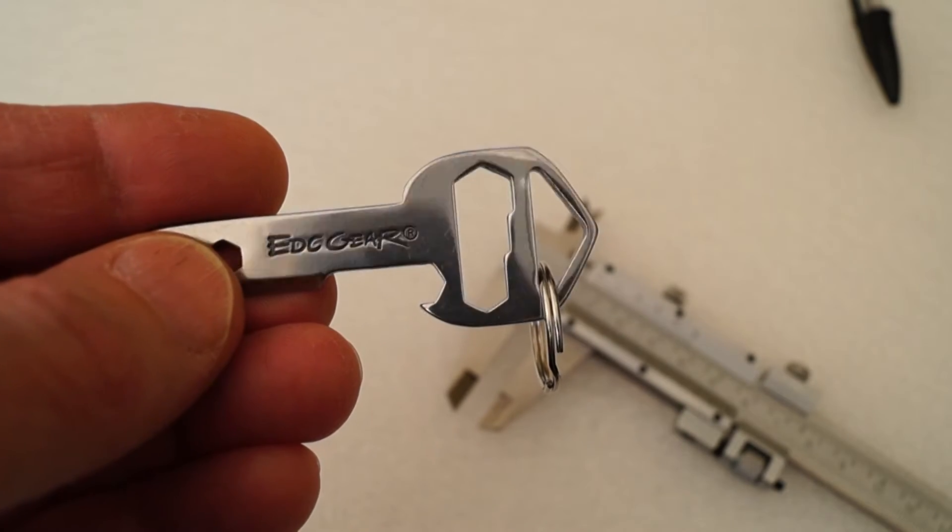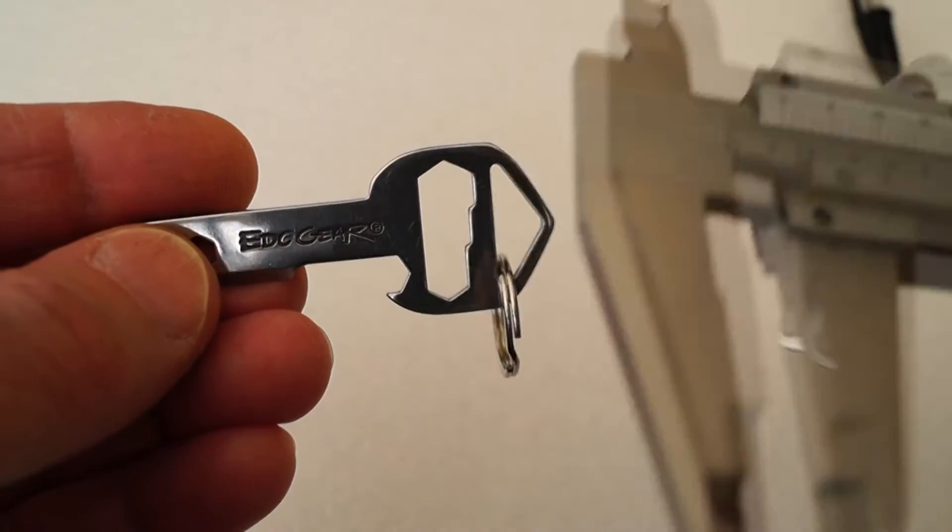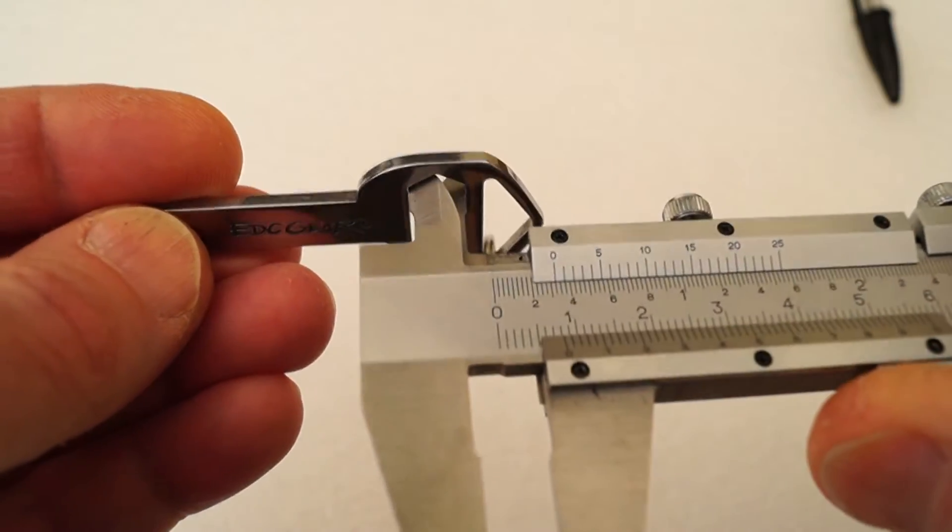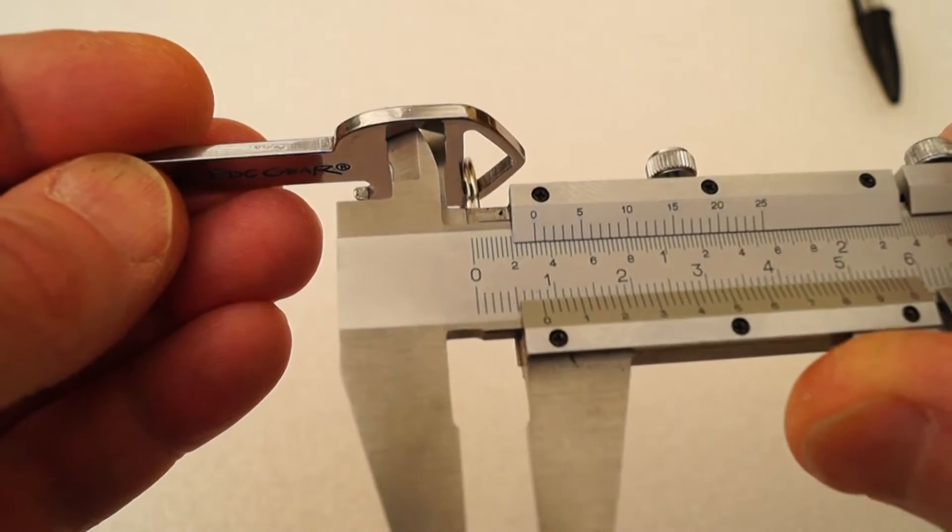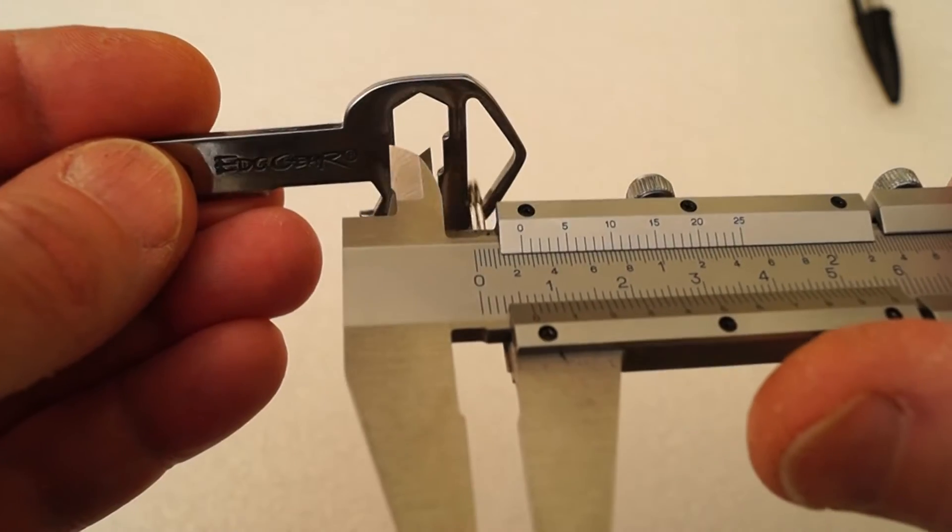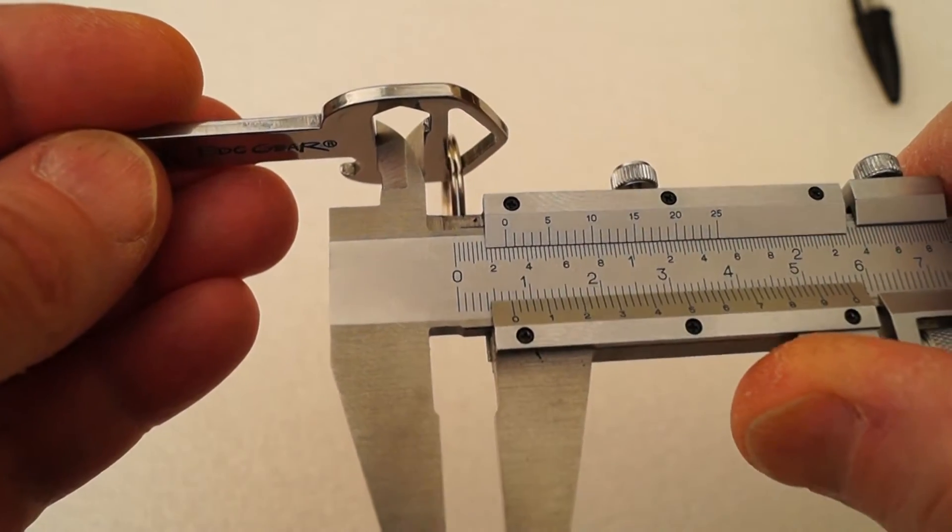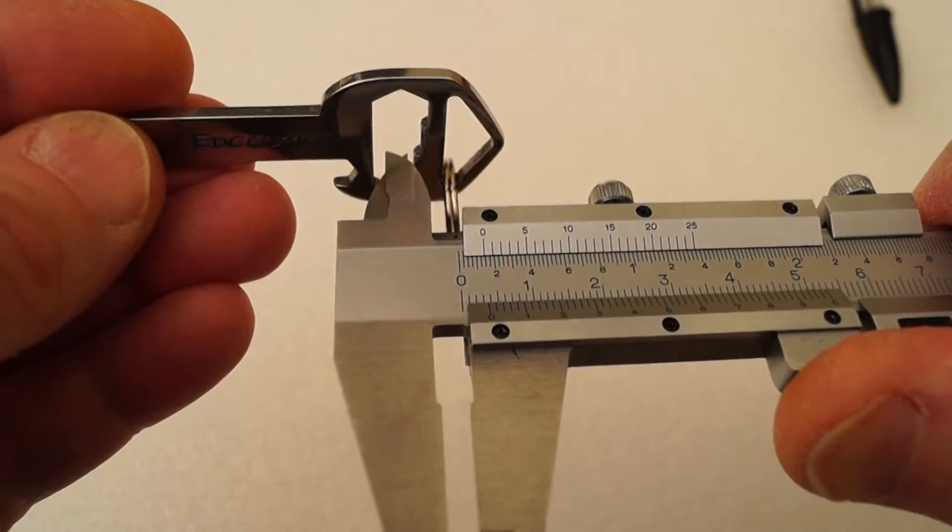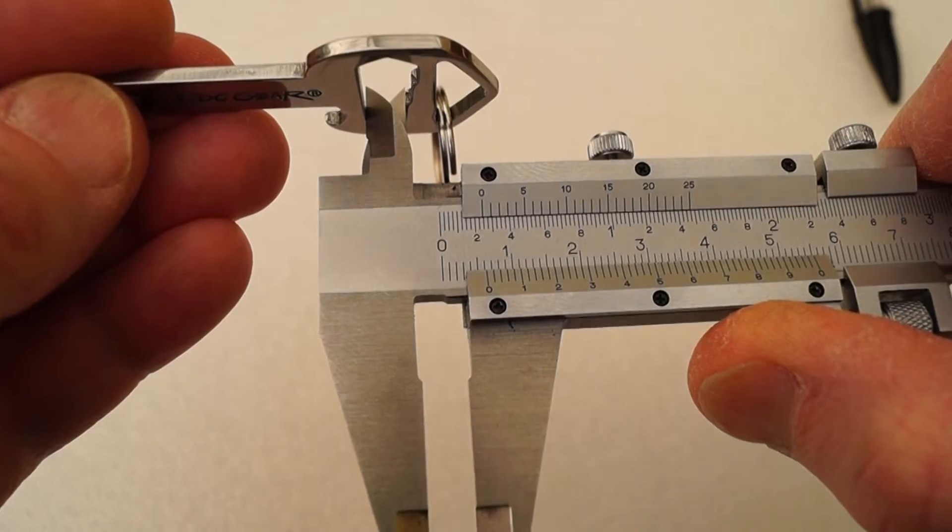This being a clone, EDC gear haven't quite got some of the dimensions right. For instance here, we have a measurement of 8.3mm for what is supposed to be 10mm. The next one down is 7.3mm and the final one is 6.3mm.